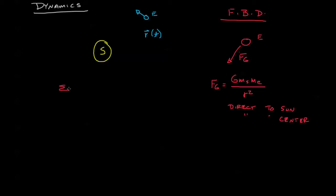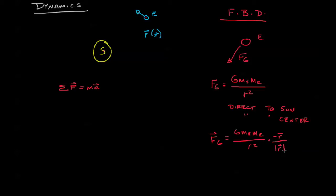We want to use our equations of motion — sum of forces equals ma — to find the position as a function of time. The gravitational force magnitude doesn't tell us the direction, so let's put it into vector form. We have G·Ms·Me divided by r squared, multiplied by the unit vector to the center of the coordinate system. That unit vector is negative r divided by the magnitude of r, where r is the vector position from the Sun to the Earth. Our equation of motion becomes: negative G·Ms·Me divided by the magnitude of r cubed, times the position vector, equals mass times acceleration.